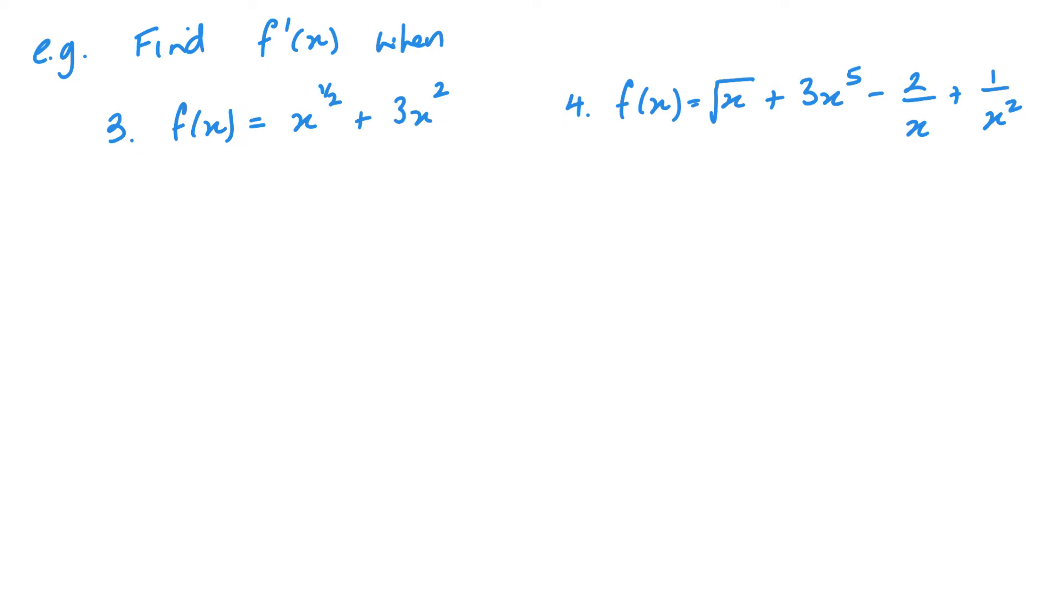Same kind of thing here with these examples. Just writing a different style of terminology there. And so we multiply by this power. So we get half x and we take 1 away from the power. Multiply by the power. Take 1 away from the power.